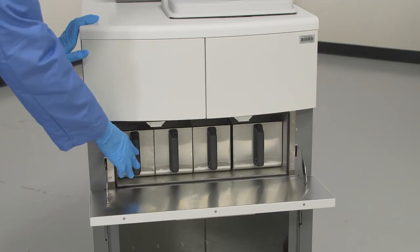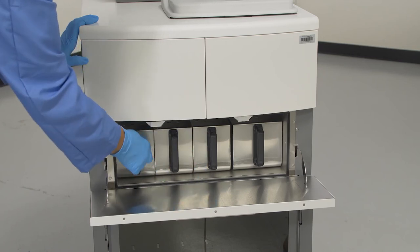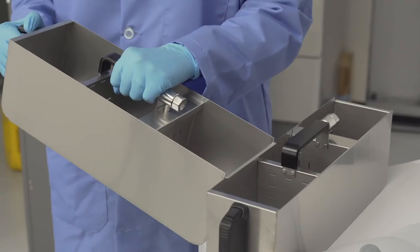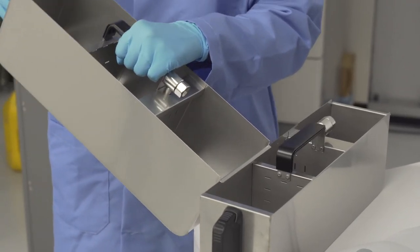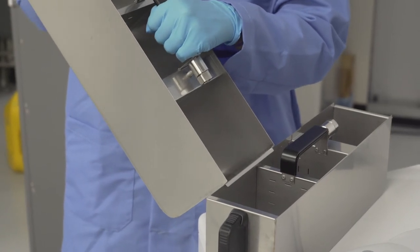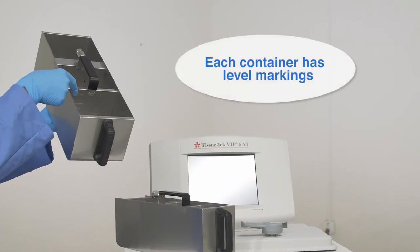Four paraffin containers are held in the oven: three small and one large. Each container has a lift that can be used to position one container on another to easily transfer paraffin. Also, each container contains a baffle with level markings.